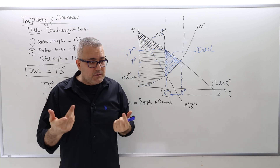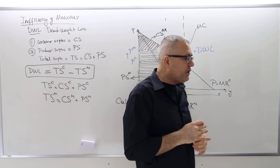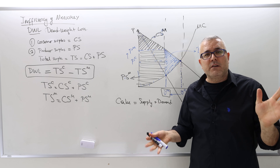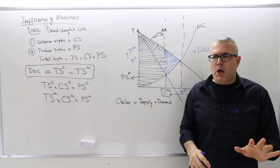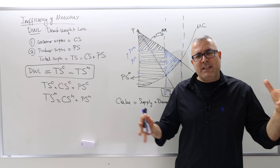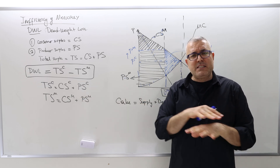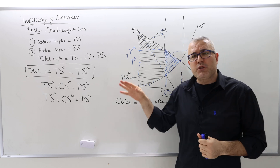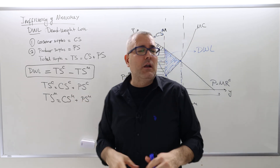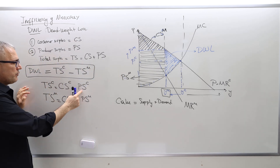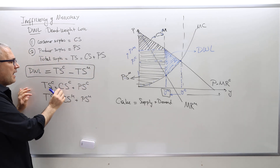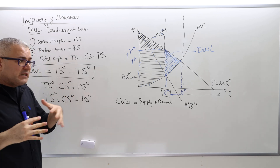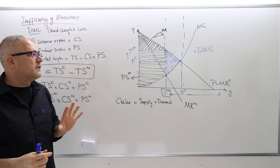If things are still fuzzy, one reason is that in economics, efficiency doesn't necessarily mean that things are fair — like sharing 50-50. If one person gets the whole cake and the other gets nothing, that's actually an efficient way of sharing the cake. If producer surplus equals total surplus and consumer surplus is zero, that's efficient — clearly not fair, but it's efficient. Efficiency has nothing to do with fairness.